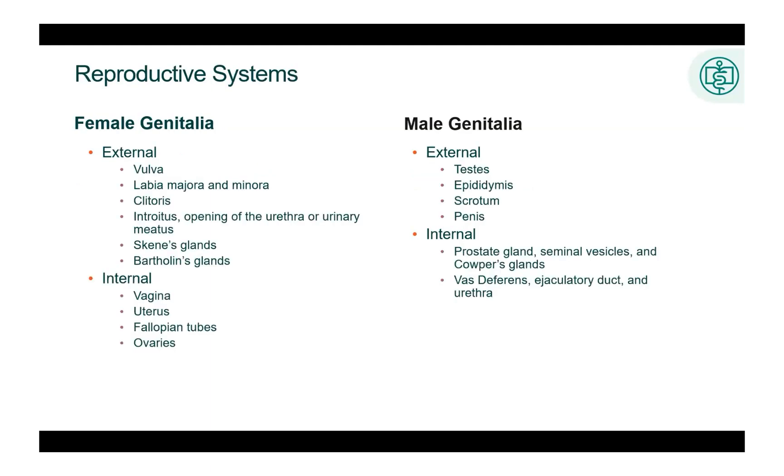The organs of the reproductive system differ greatly between male and female. However, their functions are similar. The male and female reproductive systems include external and internal genitalia. Because of the makeup of the male and female reproductive systems, the female is more likely to get urinary tract infections.